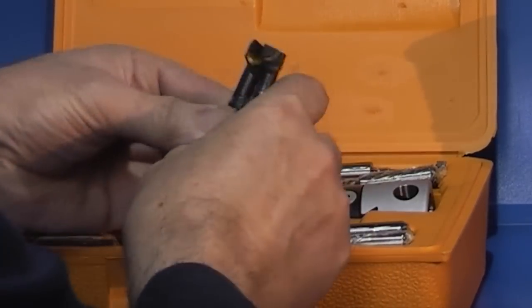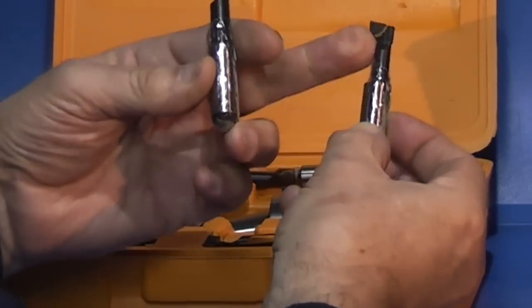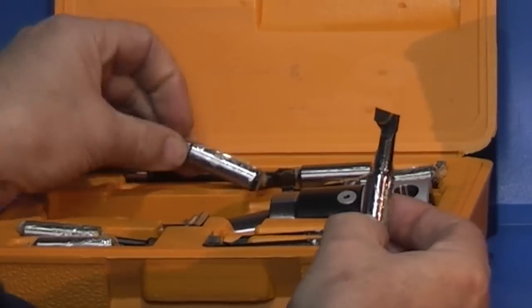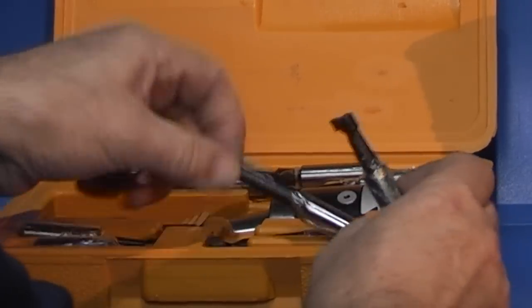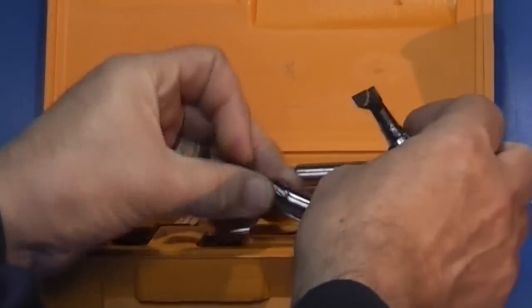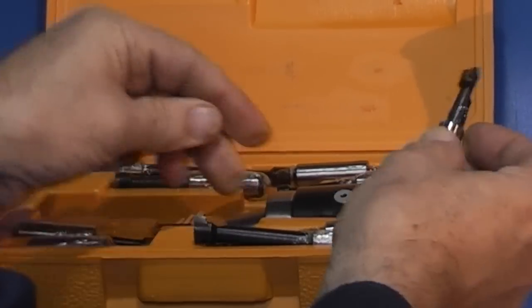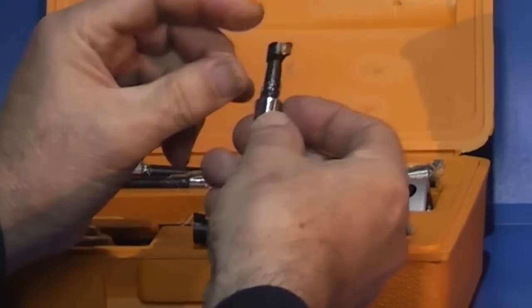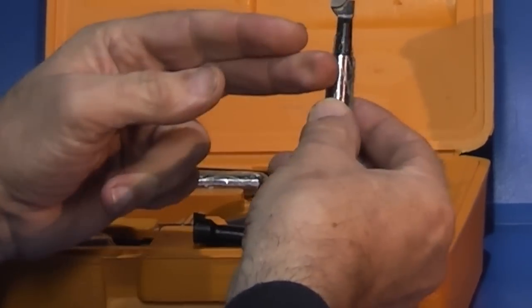So if you're using the short one it's thinner. If you're using the longer one it's a thicker shank. Today I'll use the short one because I only need to go 15mm deep into the aluminium.